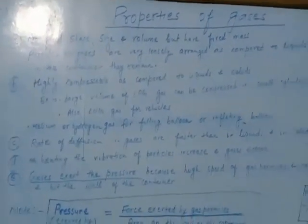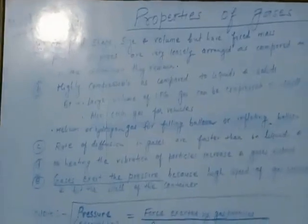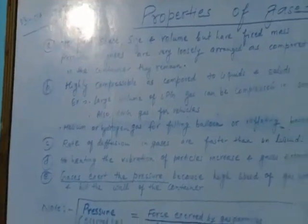So gases do not have a fixed volume — they spread themselves in the container they remain in. The second property is that gases are highly compressible compared to liquids and solids, because the particles in gases have much more vacant space between them. For example, large volumes of LPG gas can be compressed into small cylinders. CNG gas is stored in cylinders and used as fuel for vehicles. Helium and hydrogen gases are stored in cylinders to fill balloons.